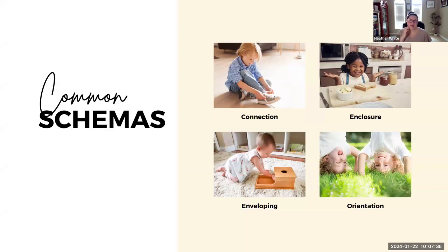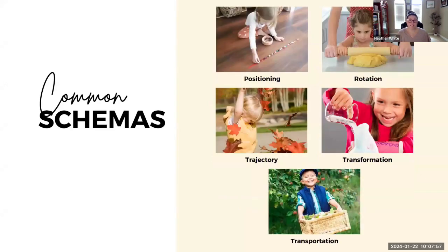There are nine common schemas present in early childhood: the connection schema, enclosure, enveloping — those two are very similar and we'll get into that — orientation, positioning, rotation, trajectory, transformation (also known as the transforming schema), and transportation (the transporting schema). We're going to explore each of these on a deeper level — what they mean, what these types of play look like, and what activities we can introduce that align with a child's interest.